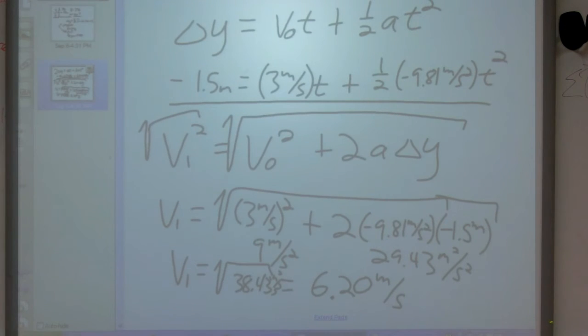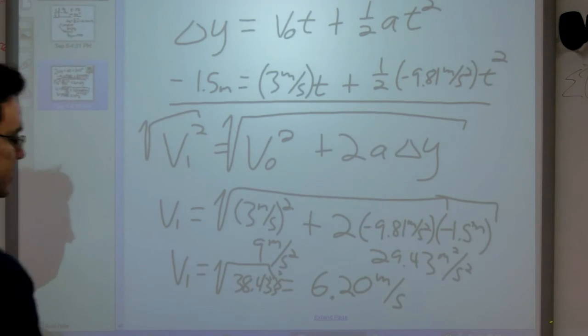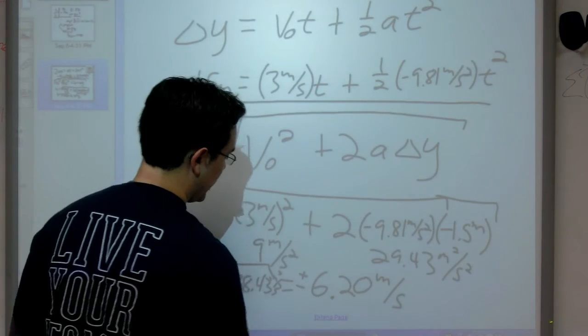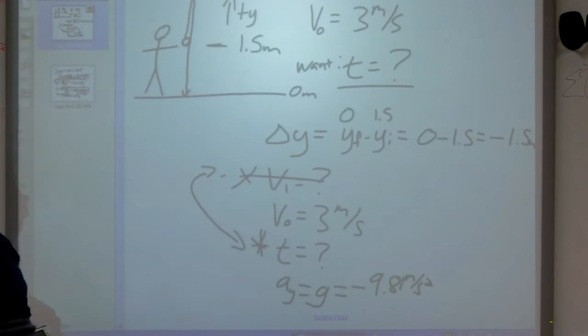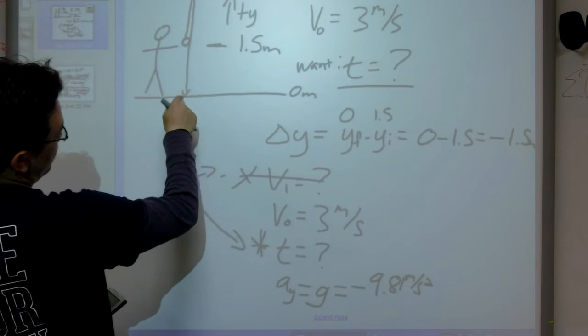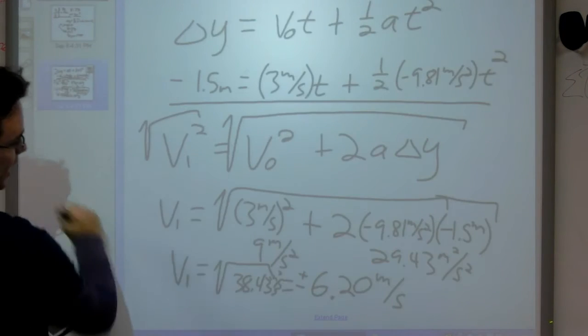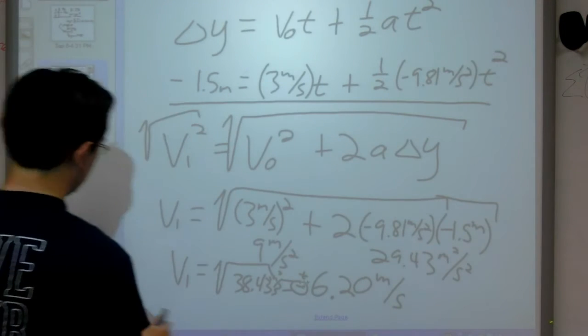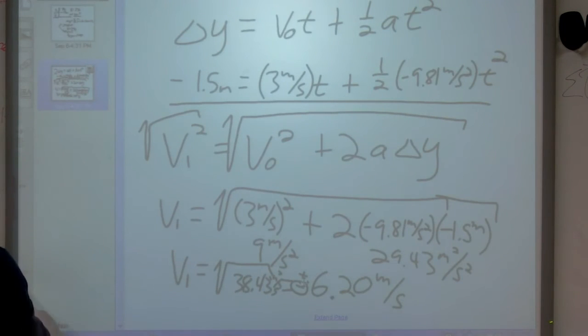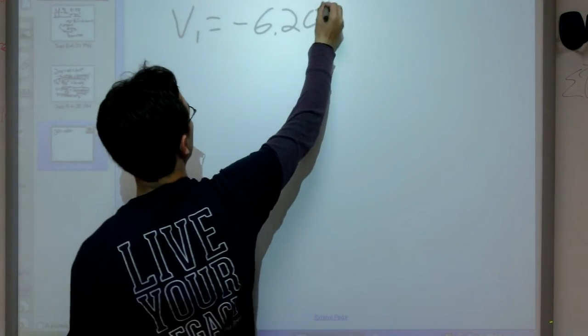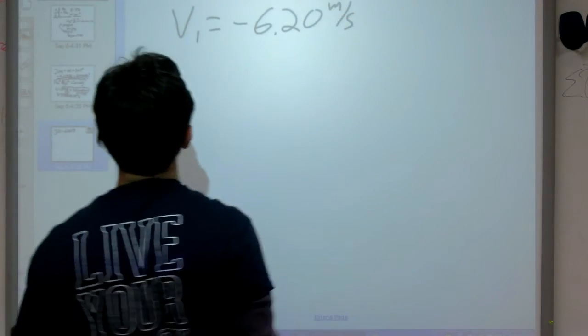That's our final velocity. Quick question though. Because we've got this square root, we technically have two answers. This could be positive or negative. Taking a look back at our problem, the final velocity is right before it crashes into the ground here. So most likely the velocity is pointed down. We want our minus. So now we know that v final equals negative 6.20 meters per second.